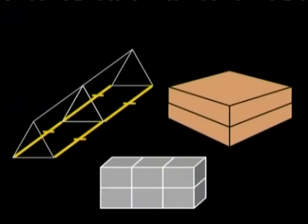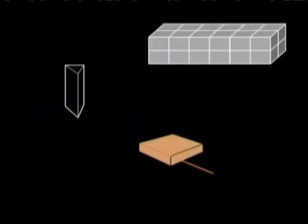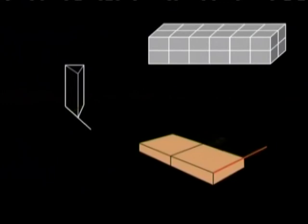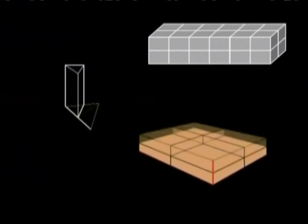Well, our conjecture about volume has worked on this pizza box which is a right rectangular prism. It has worked on this cube and now it has also worked on this triangular prism. Every time we found that when we only doubled one dimension of the shape, then the volume doubled. When we doubled all the dimensions of the shape, the volume of the shape was eight times more.